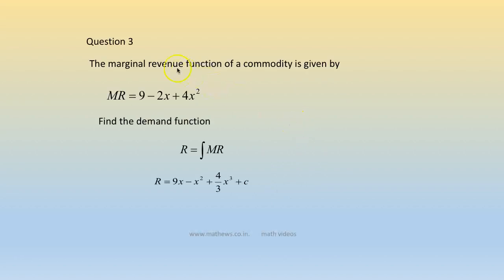Question 3: the marginal revenue function of a commodity is given by marginal revenue = 9 - 2x + 4x². Find the demand function.